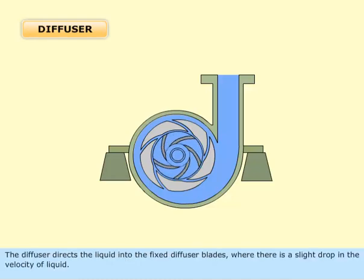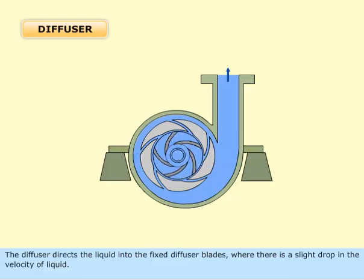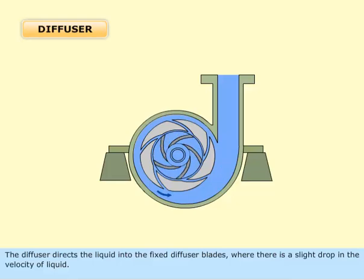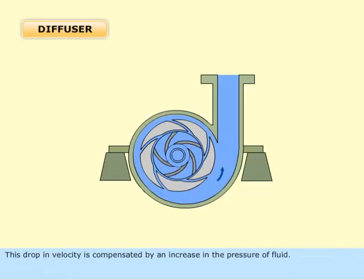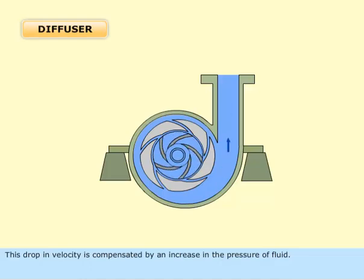The diffuser directs the liquid into the fixed diffuser blades, where there is a slight drop in the velocity of liquid. This drop in velocity is compensated by an increase in the pressure of the fluid.